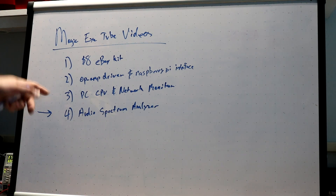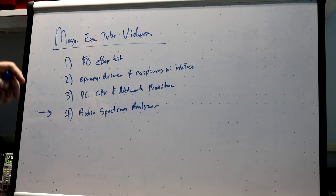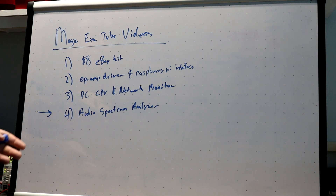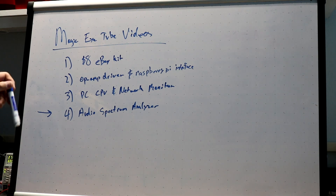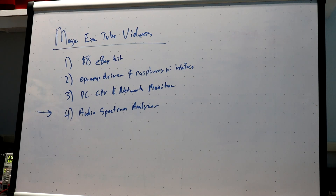In the third one, I built a PC CPU and network monitor. Using a Python program on the Windows PC, I was able to see the CPU utilization on one tube and the network utilization on a second. And in this video, I'm going to build an Audio Spectrum Analyzer. It uses six tubes and displays a different frequency on each of the six tubes, and we'll play some music and see how it responds.